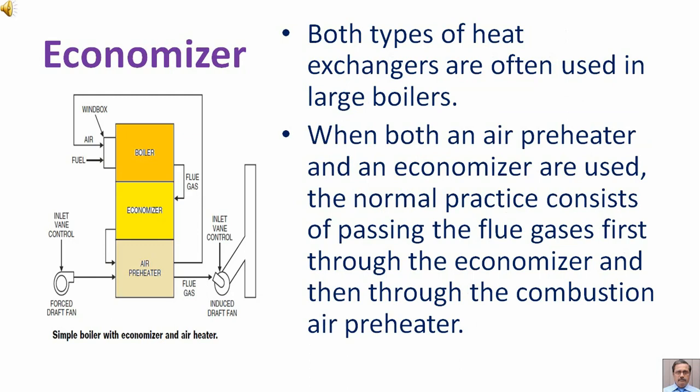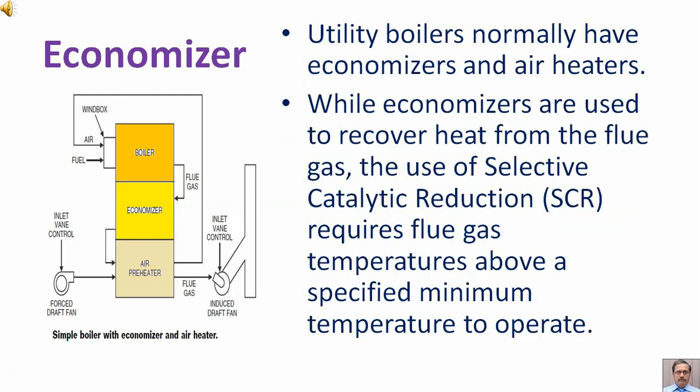Both types of heat exchangers are often used in large boilers. When both an air preheater and an economizer are used, the normal practice is to pass the flue gases first through the economizer and then through the combustion air preheater. Utility boilers normally have economizers and air heaters.